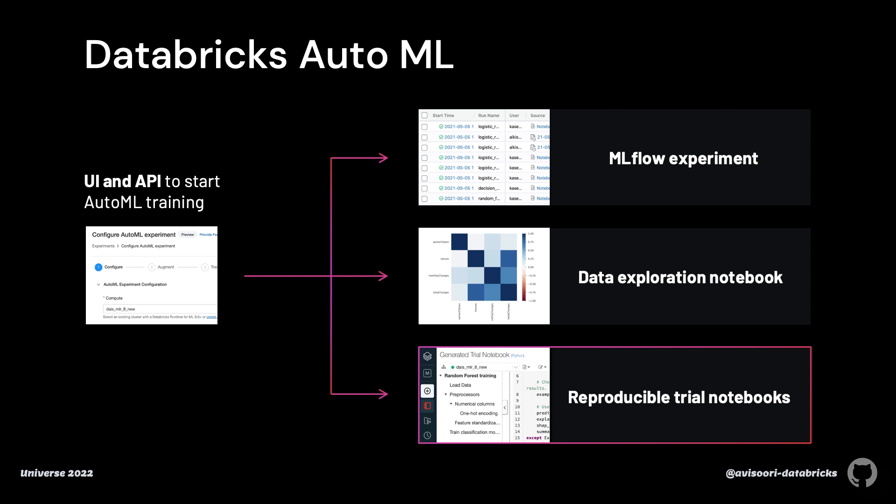You can run AutoML from the UI or the API. AutoML will test different models, tune hyperparameters, and return the list of models produced. There are three important aspects to consider. First, it's tightly integrated with MLflow — all models trained and corresponding metadata are neatly organized into an experiment. Second, a data exploration notebook is returned. Third, reproducible trial notebooks can be edited as desired to customize the model. With all models automatically logged to MLflow, it's easy to deploy an AutoML model for batch, streaming, or online inference via the model registry.